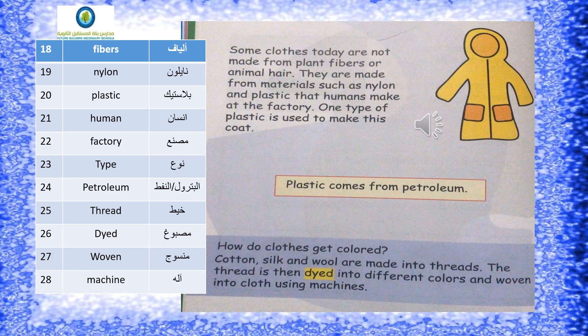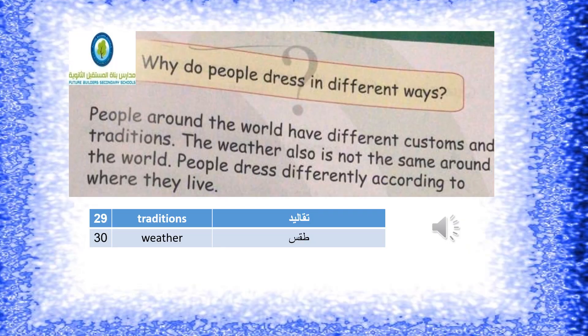Now with the meaning list: Fibers – al-yaaf. Nylon – nylon. Plastic – plastic. Human – insan (إنسان). Factory – masna' (مصنع). Type – nour. Petroleum – al-petrol. Thread – khayt (خيط). Dyed – masbugh (مصبوغ). Woven – mansooj (منسوج). Machine – ala (آلة).